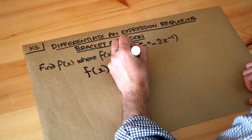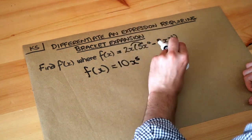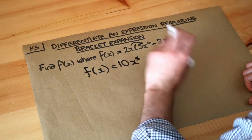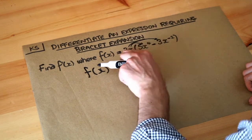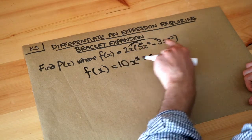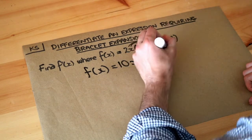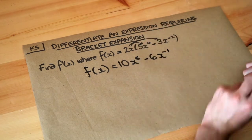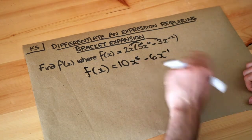And then we do the 2x times the -3x. So 2 times -3 is -6, and then x^1 times x^(-2) is x^(-1). And now we can just differentiate each of these terms.